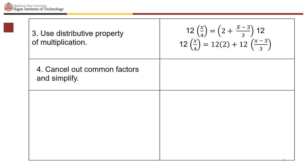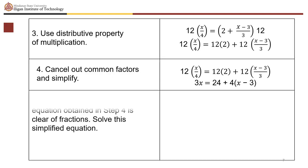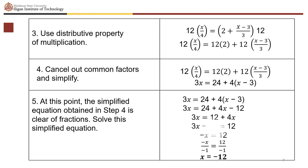Cancel out common factors and simplify. 12 times x over 4: 12 divided by 4 gives 3, so that's 3x. 12 times 2 gives 24. 12 times (x minus 3) over 3 gives 4 times (x minus 3). The simplified equation, now clear of fractions, is: 3x equals 24 plus 4 times (x minus 3).